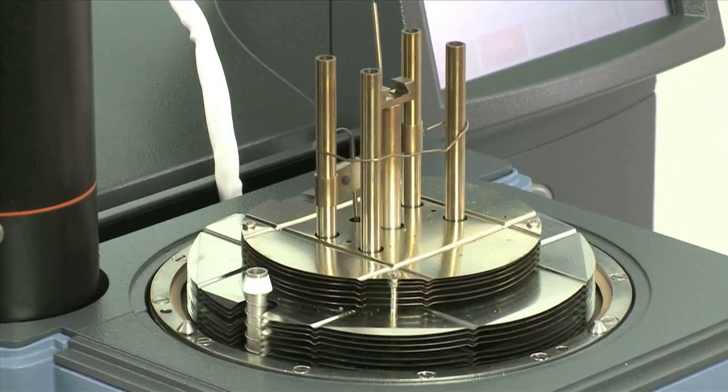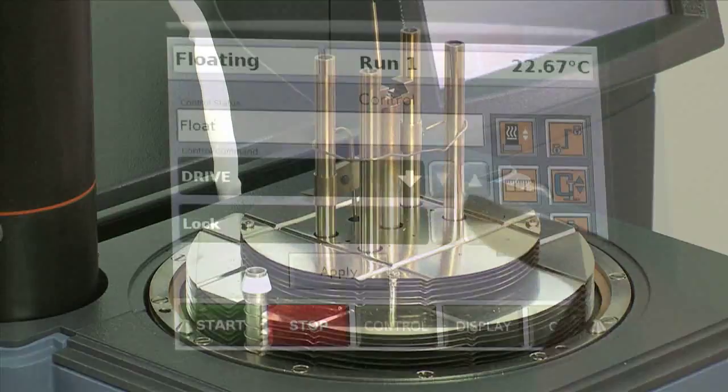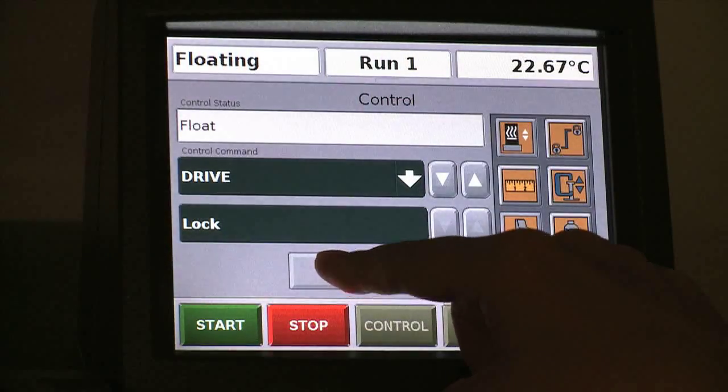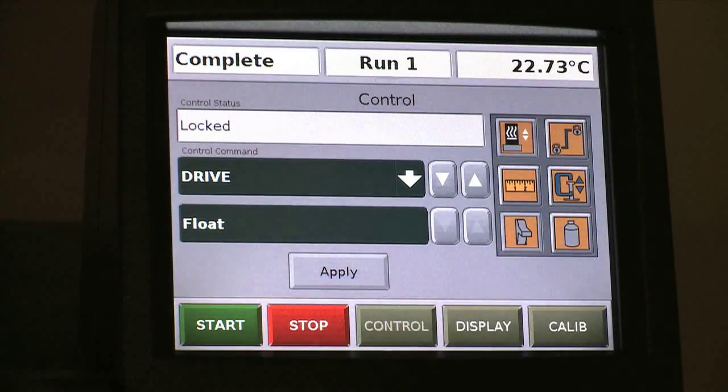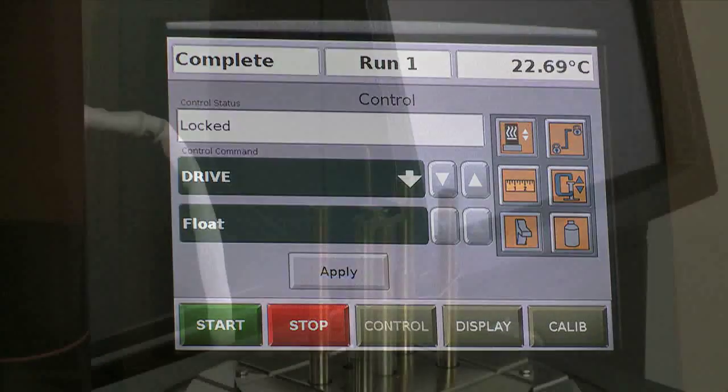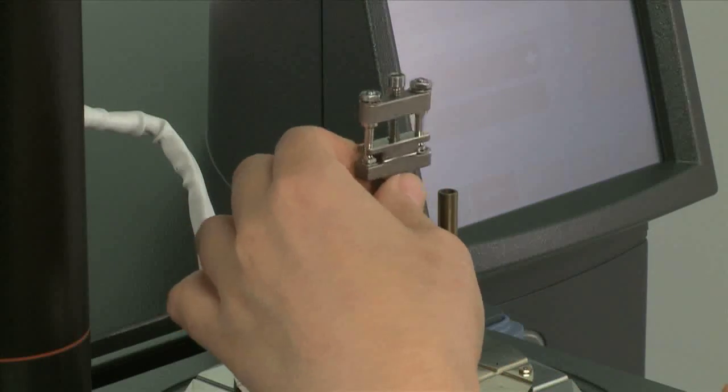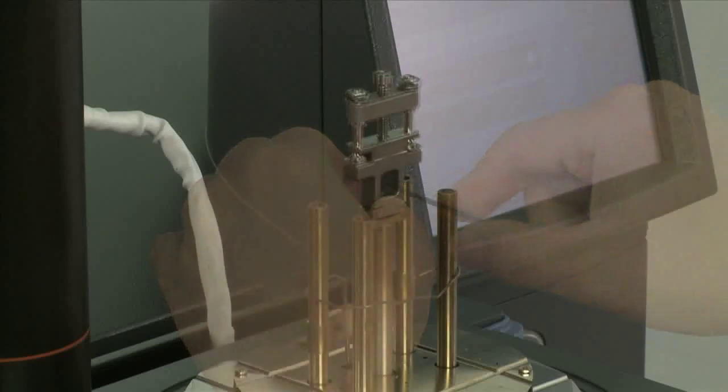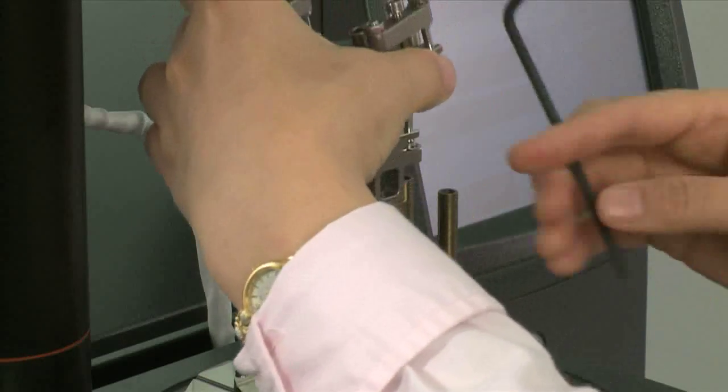Before calibration, we shall first install the clamp to the instrument. From the touch screen, lock the drive shaft. Install the movable clamp to the drive shaft, then install the stationary clamp.